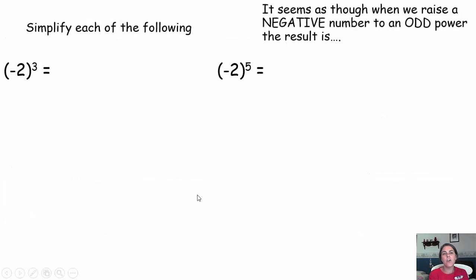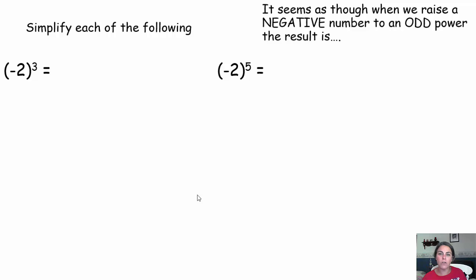In order to start our discussion, I'd like you to take a minute and simplify each of the following. Take our base of negative 2 and raise that base to a couple of different odd exponents. Take negative 2 to the 3rd, negative 2 to the 5th, simplify, get a single value, and then decide: if you have a negative base raised to an odd power like a 3 or a 5, will the result be positive or negative? Pause the video, try it out, come on back.